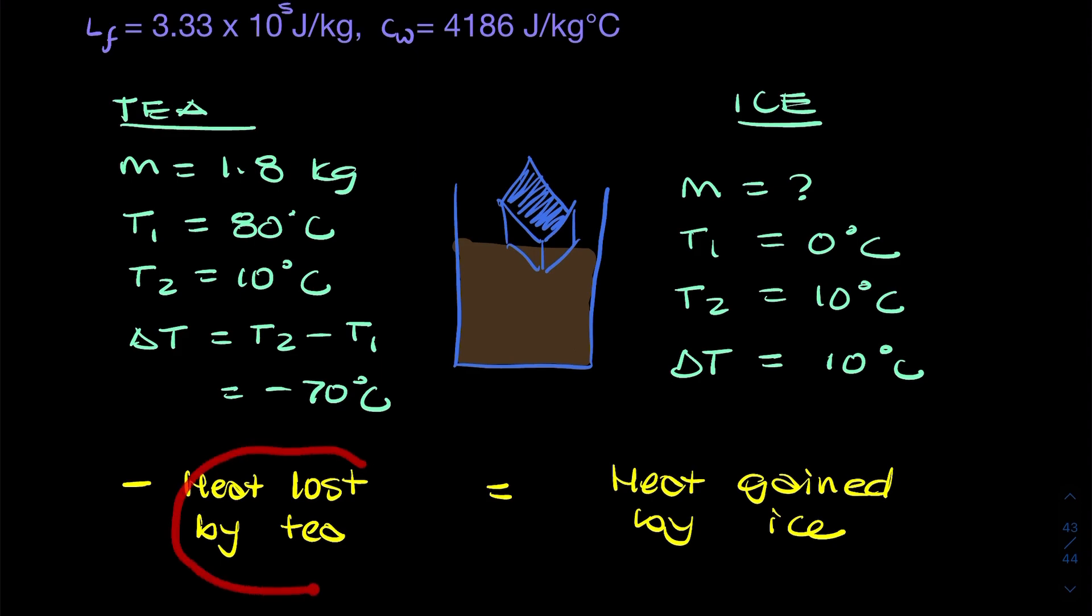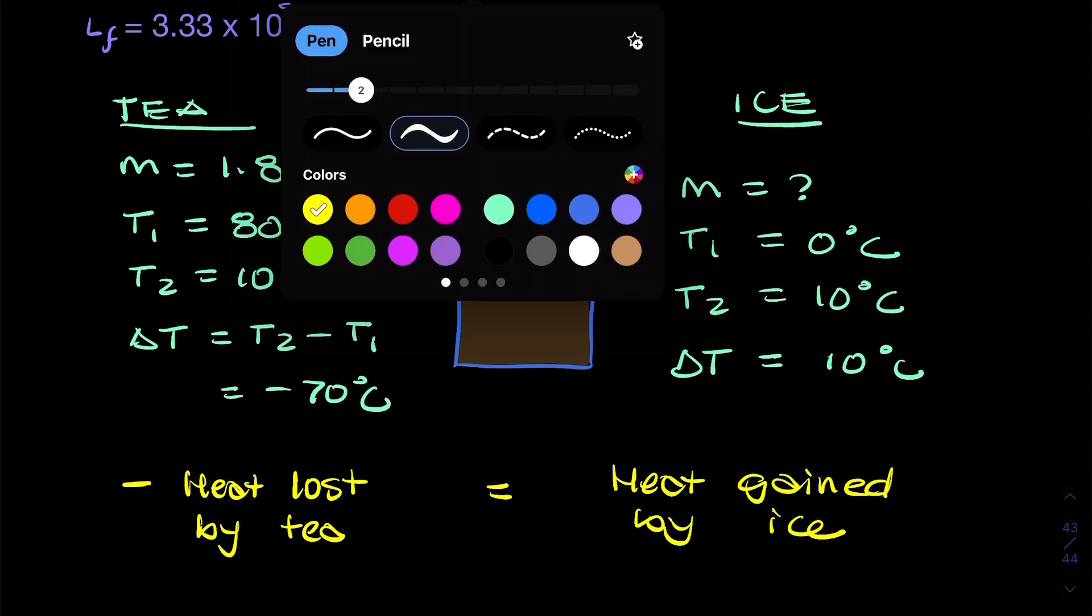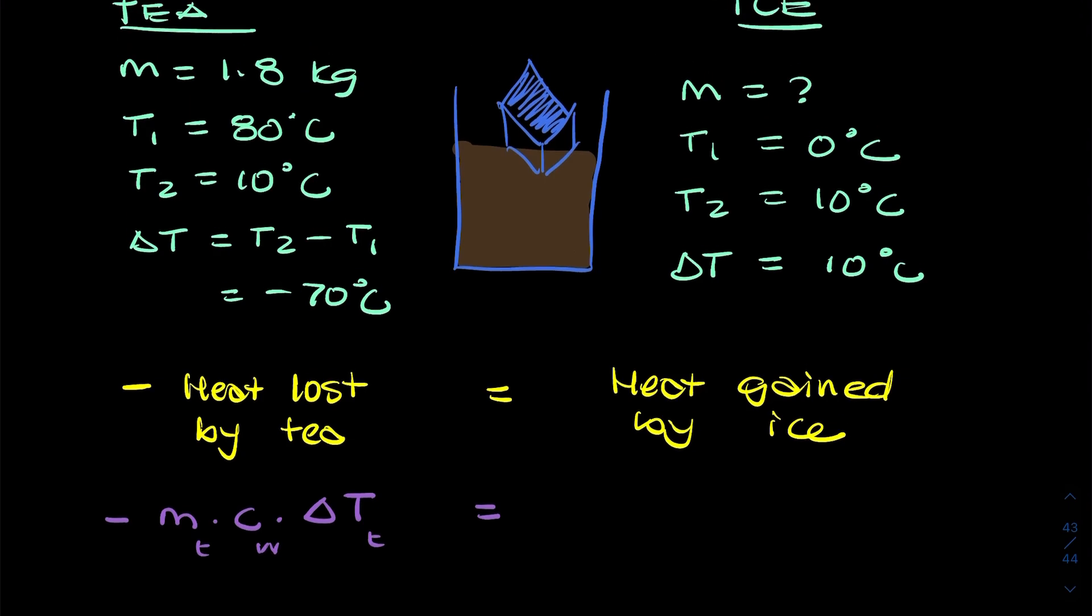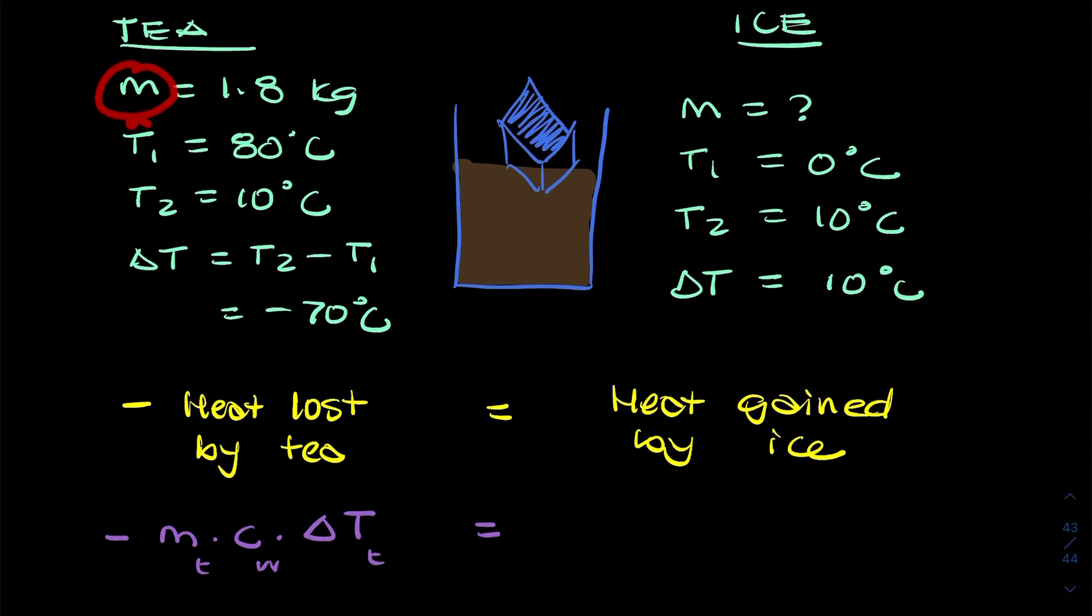Now, the heat lost by the tea, there's a simple equation for that, a simple formula. It's the mass multiplied by the specific heat capacity multiplied by the change in temperature. That's our minus sign. So that's the mass of the tea, specific heat capacity of the water, and delta T for the tea. I should put little subscript T to show that these are all for the tea.